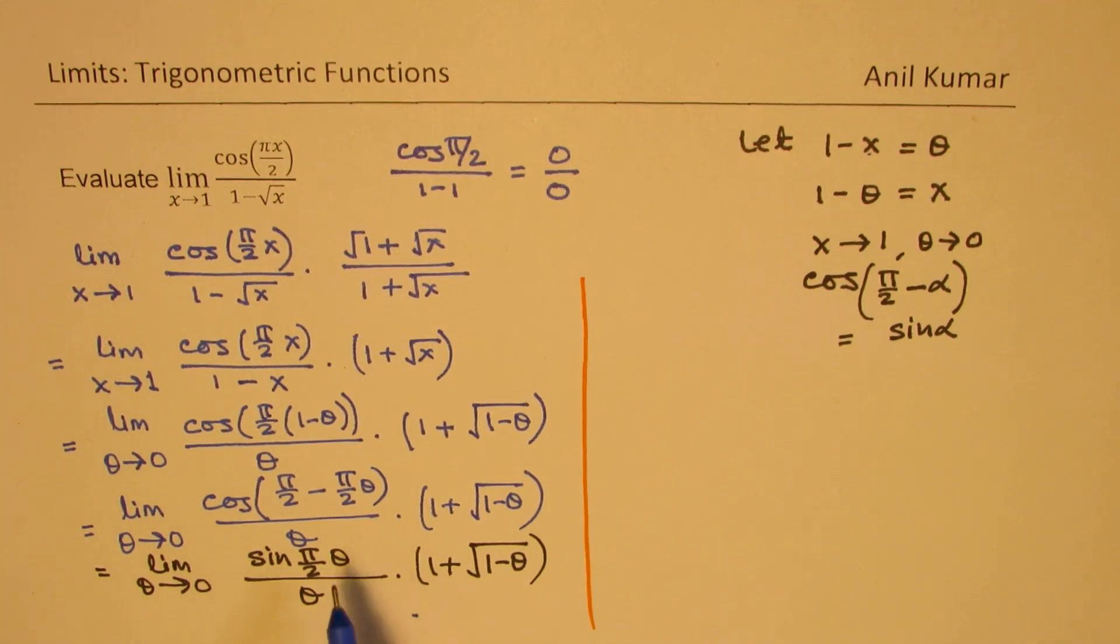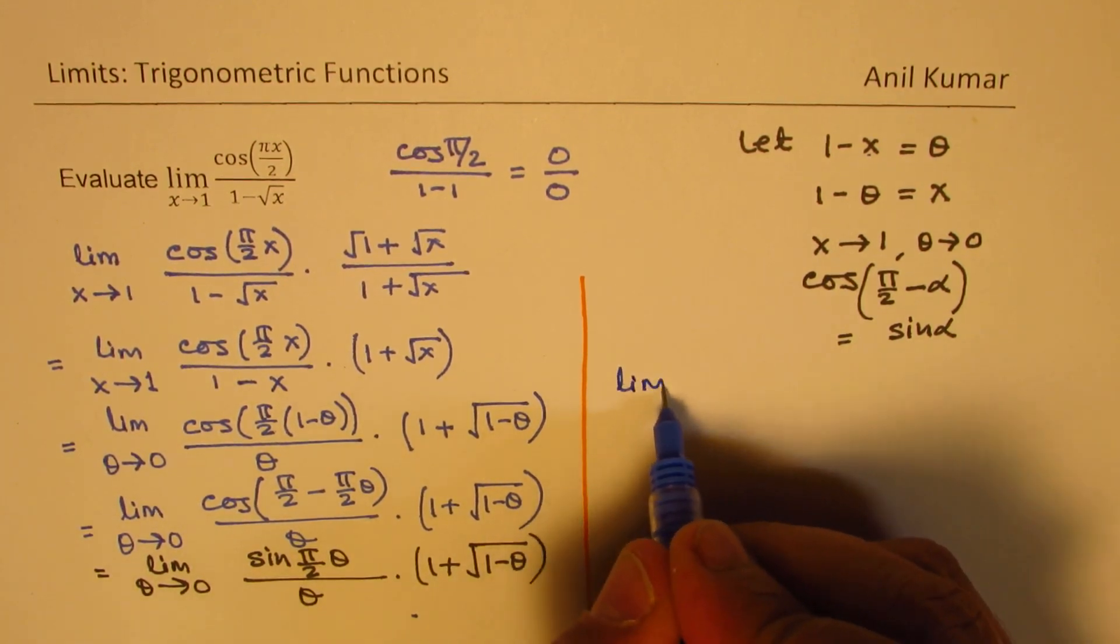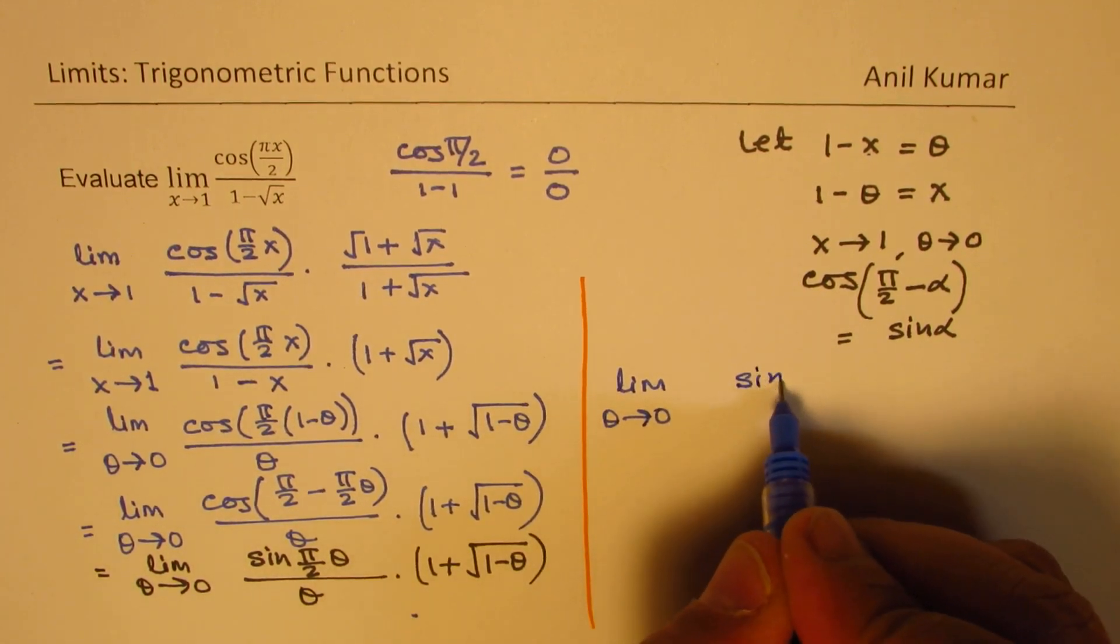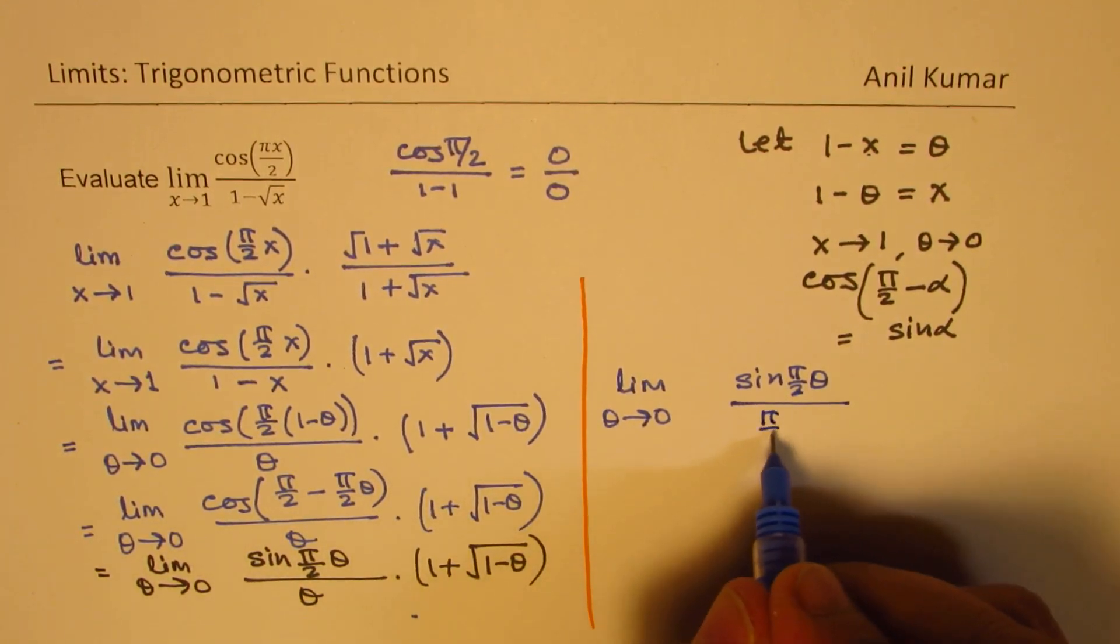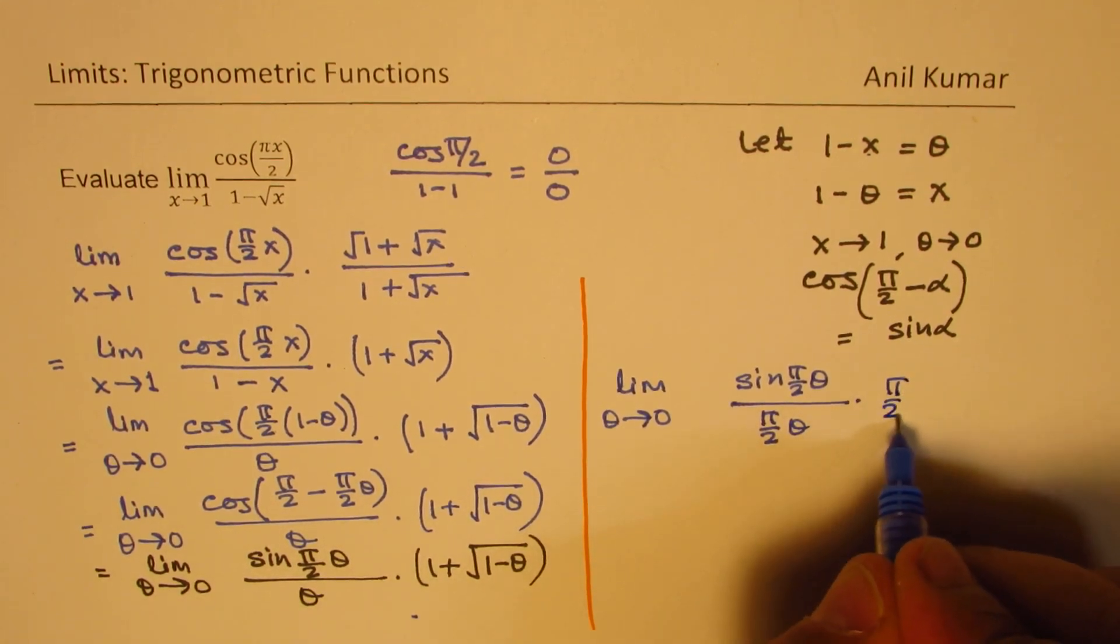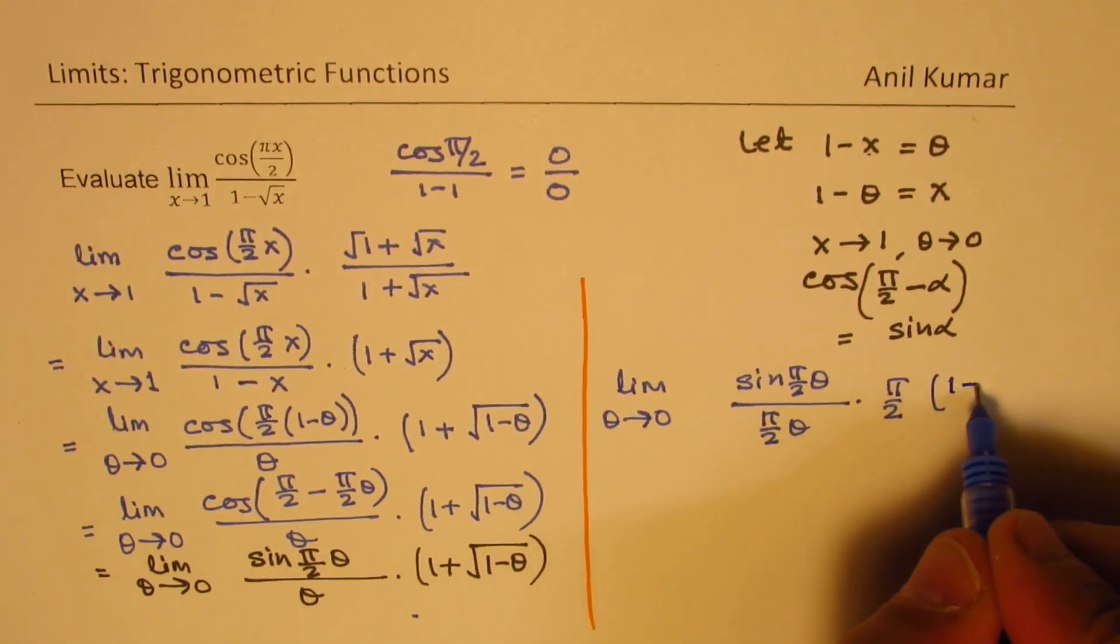Now we can multiply and divide by π/2 so that we get limit theta approaches 0, sin(πθ/2) over (πθ/2) times π/2, and (1 plus square root of (1-θ)).